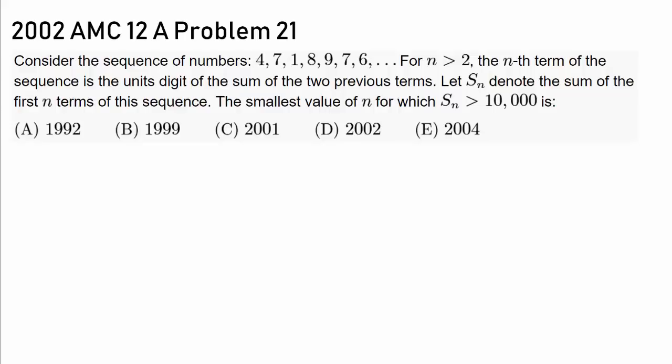Let's consider the sequence of numbers 4, 7, 1, 8, 9, 7, 6. We know for n > 2, the nth term of the sequence is the units digit of the sum of two previous terms. So to find this term, we did 4 plus 7, which is 11, and we are looking at the units digit, which is of course 1.